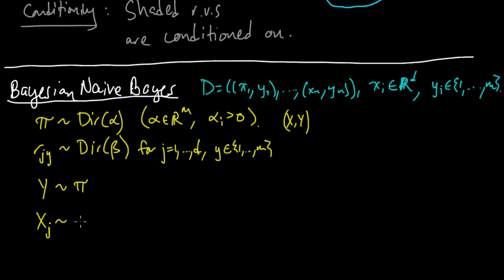x was a vector, and the jth feature was distributed according to R_j capital Y. So this little y is set to the value of capital Y, whatever y happens to be. So y is the class, and x_j is the jth feature.